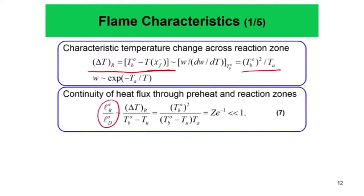We found that the ratio of the reaction zone thickness to the diffusion zone thickness — assuming Lewis number equal to 1, not discriminating between mass and thermal diffusion — is given by 1 divided by the Zeldovich number. Since the Zeldovich number is a very large quantity due to the large activation temperature, L_r / L_d0 is much smaller than 1.